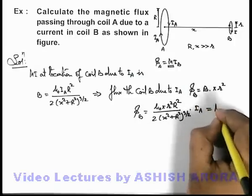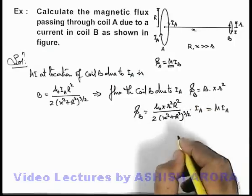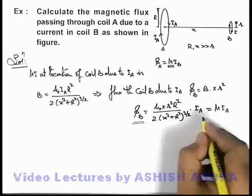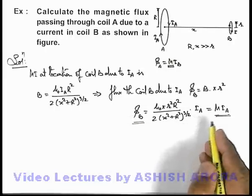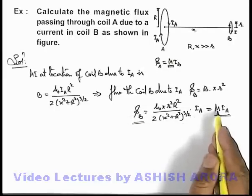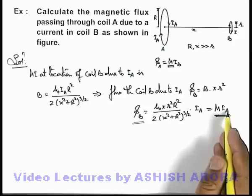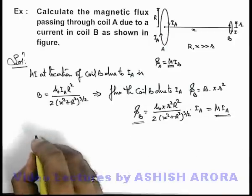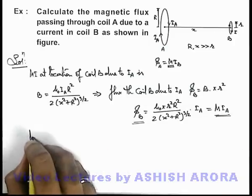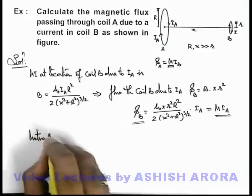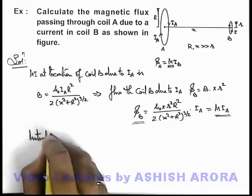And this can also be written as M·i_A because flux through the second coil must be given by the product of mutual induction coefficient and the current in the first coil. So comparing this relation we can calculate the mutual induction mutual inductance coefficient.